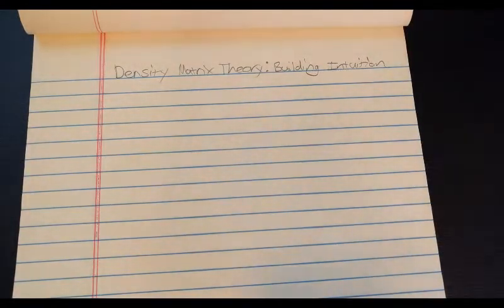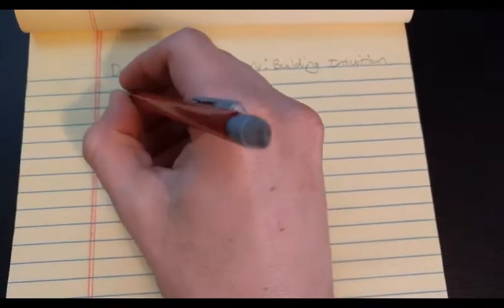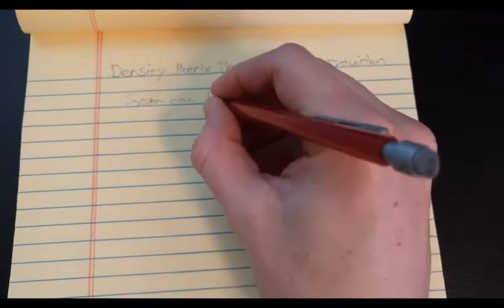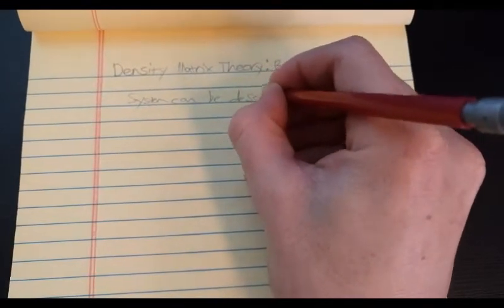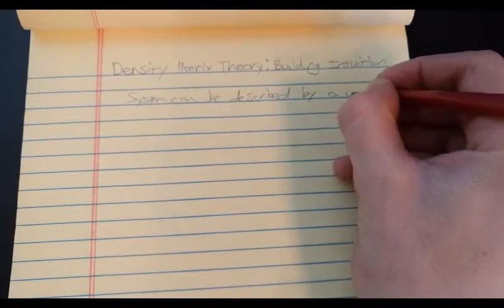A system can be described by a single vector, just like we described a wave function with a vector. So, this is important. We should write this down. A system can be described by a vector.